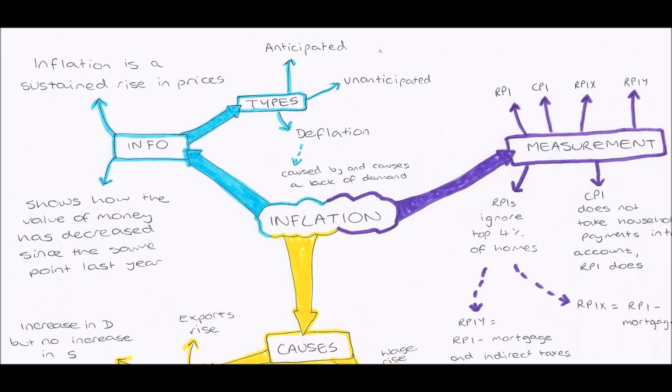However, the RPI, Retail Price Index, ignores the top 4% of households because if you are in the richest top 4% of the people in the country, you won't be affected by inflation because you can still buy the goods no matter what, even if their price does increase slightly.